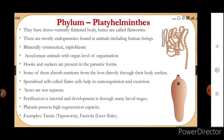Specific organs like hooks and suckers are present in the parasitic forms. Hooks allow the parasite to attach to the host cell, and suckers help in absorbing nutrition from the host cells. These are definite characteristics of parasitic platyhelminthes.